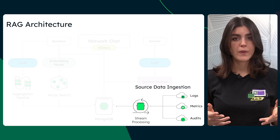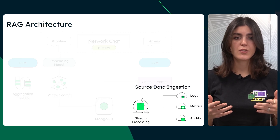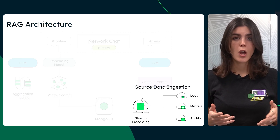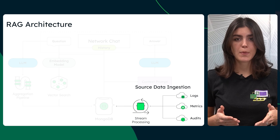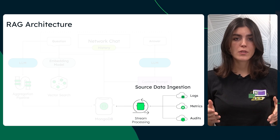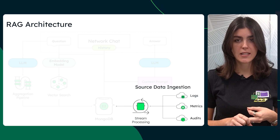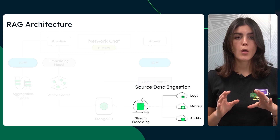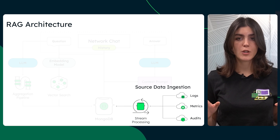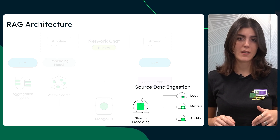Before querying the data, we need to ingest it into the architecture. MongoDB's stream processing capability allows us to process logs, metrics, and auditing data on the fly, creating a 360-degree view of network activity.